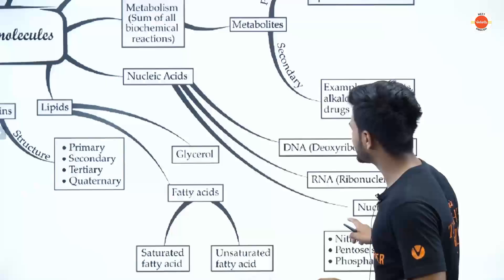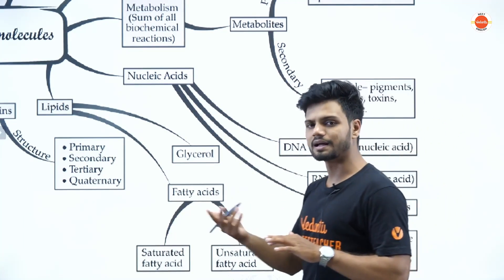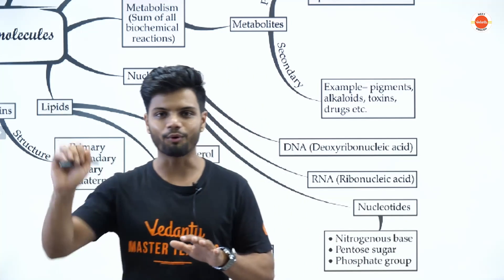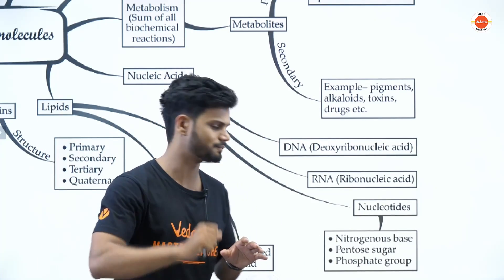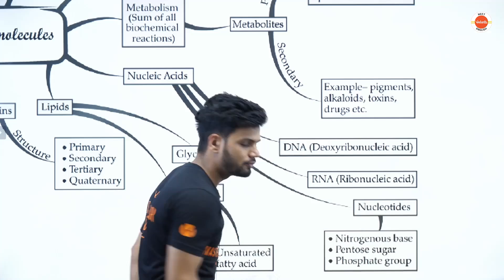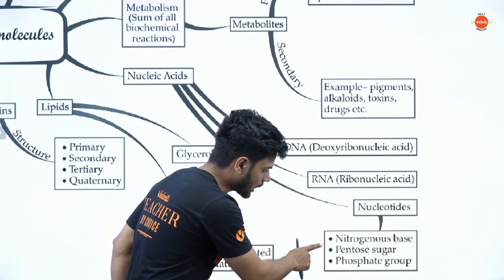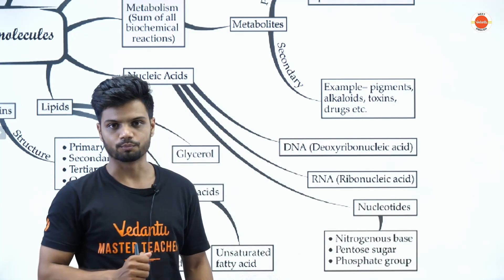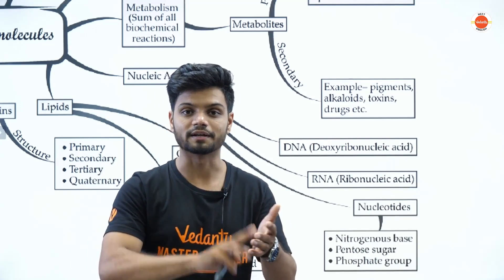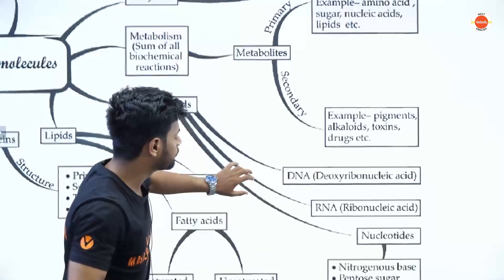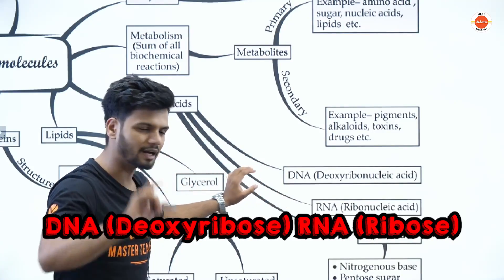Then we have nucleic acids: DNA, RNA, and nucleotides. DNA and RNA would have been studied deeply in molecular basis of inheritance. A nucleotide is made up of three units: a nitrogenous base, a pentose sugar, and a phosphate group. You should also know the difference between a nucleotide and a nucleoside, and what type of sugar is present in DNA versus RNA.